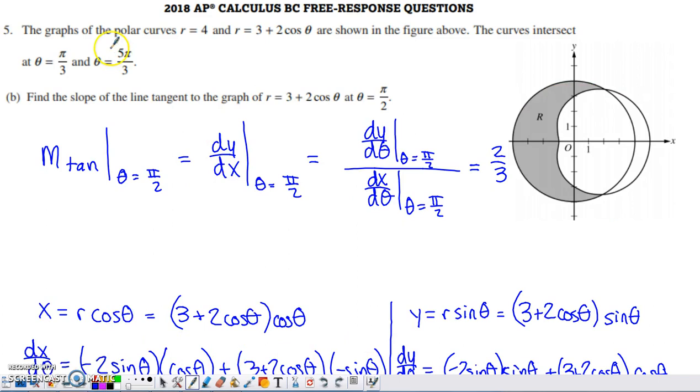Part B asks us for the slope of the line tangent to the graph of the limaçon at theta equals π/2. At π/2, we can eyeball the graph and assume this is where theta is π/2. You can envision it's going to be a medium positive slope, not real steep, not real level. The way we find the slope is we still graph this in the coordinate plane, y on this axis, x on this axis. We need to find the rate of change of y with respect to x and evaluate at π/2.